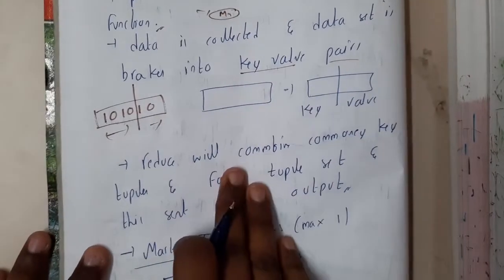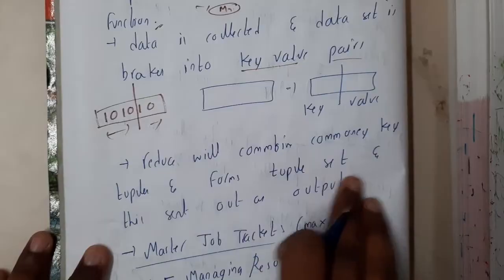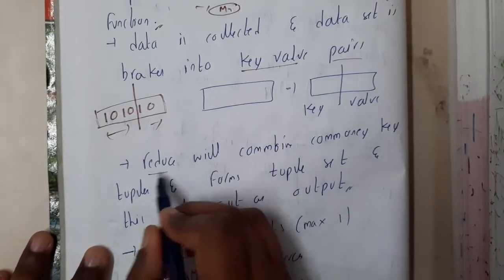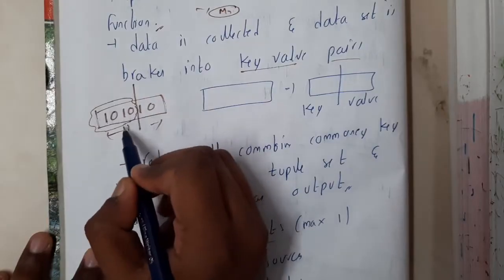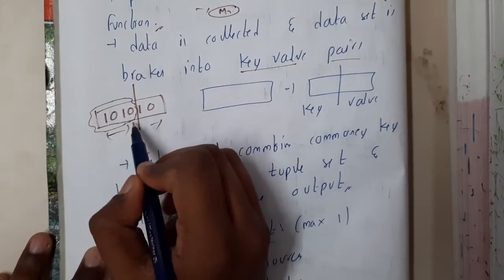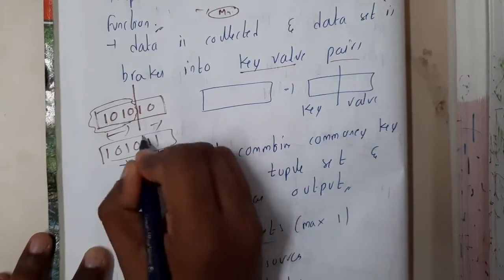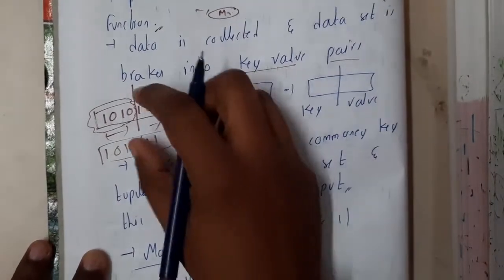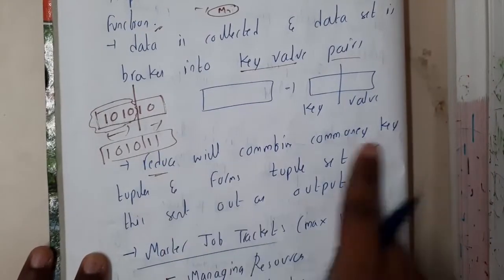Reduce will combine the keys and tuples to form a tuple set. The reduce operation finds all the keys with the same code. There could be some messages with these keys, and these belong to one particular set. This identification is done by our reduce, which will observe it and give you the output.